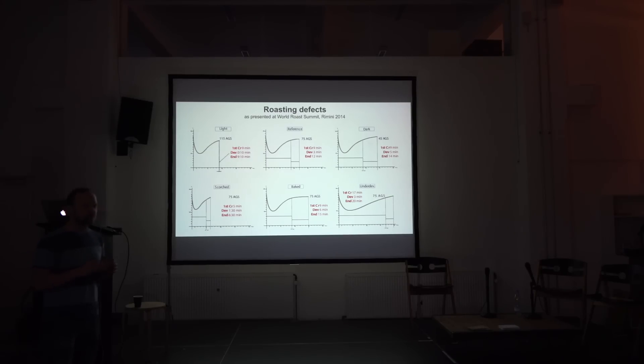The dark defect was roasted to Agtron 45. The scorched one I defined as being way quicker in terms of time to first crack, but also in development time compared to the reference. The baked one had the same time to first crack as the reference, but had six minutes development time. The underdeveloped had the same development time as the reference, but had too much time to first crack.